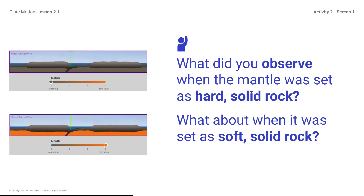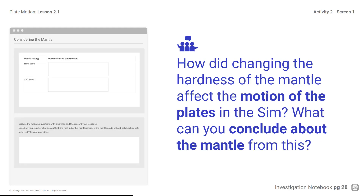What did you observe when the mantle was set as hard solid rock? What about when it was set as soft solid rock? Notice that the overlying plates moved when the mantle was set as a soft solid rock, and the overlying plates did not move when the mantle was hard solid rock. How did changing the hardness of the mantle affect the motion of the plates in the sim? What can you conclude about the mantle from this?